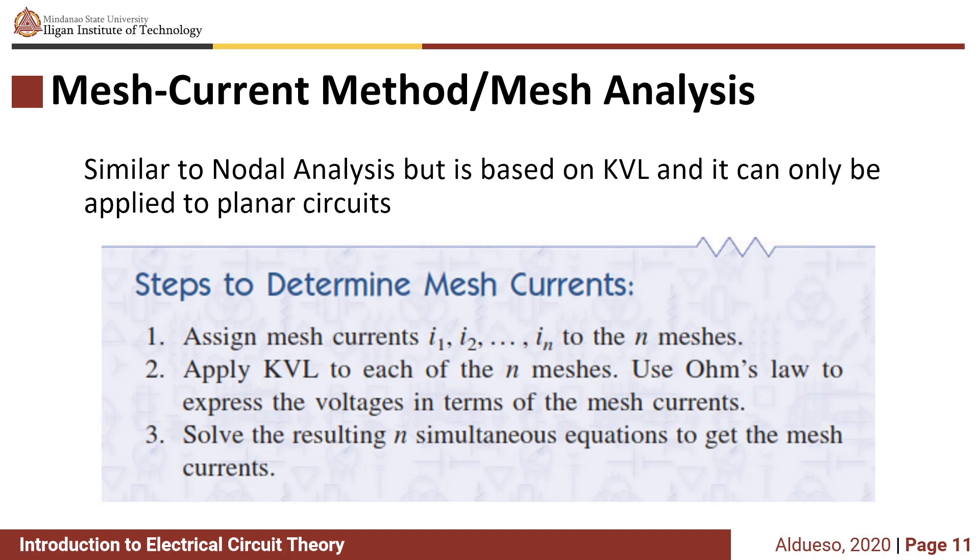First step is to assign mesh currents i1, i2 up to in to the n number of meshes. Mesh currents are the currents that are within the parameters of the mesh. As we defined before, mesh is a loop without enclosing another loop. Next step is to apply KVL to each of the n meshes. Use Ohm's law to express the voltages in terms of the mesh currents.